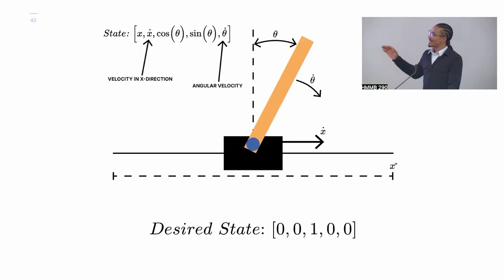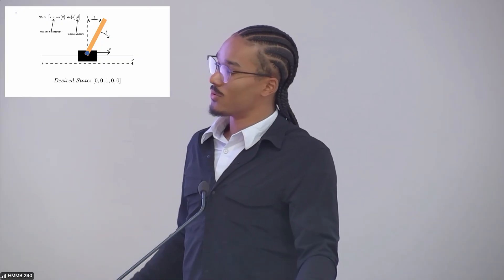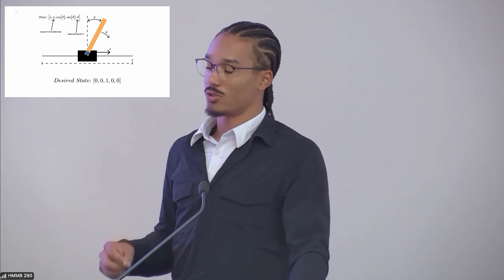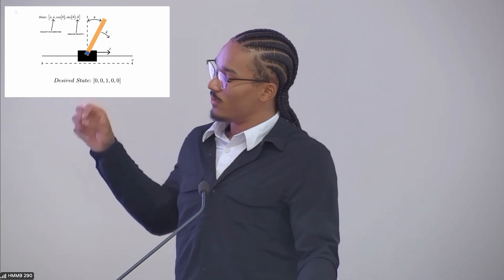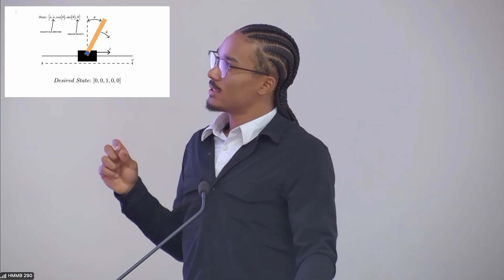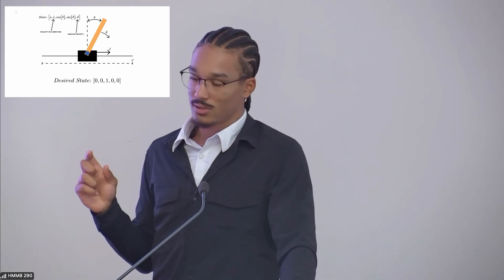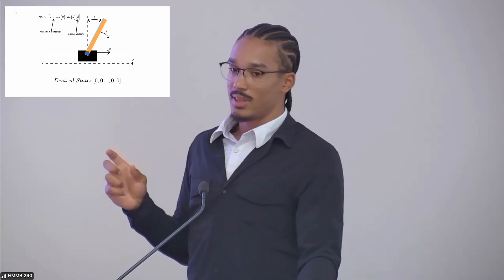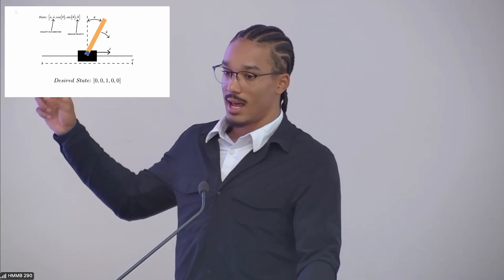And so this is the actual system that we used for our transformer and to generate our training data. As you can see, the cart can move in the X direction. But one thing to notice is that the original state vector had a theta. And instead of theta, we used cosine and sine.